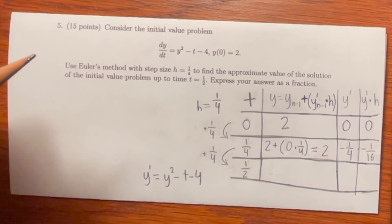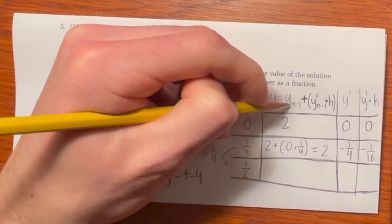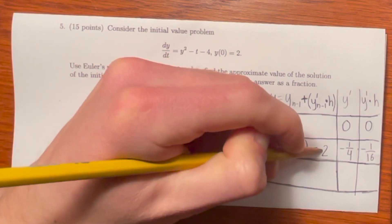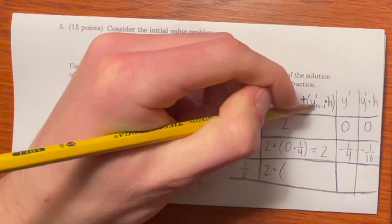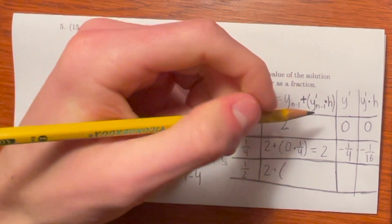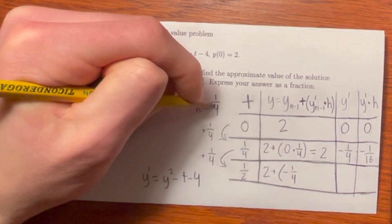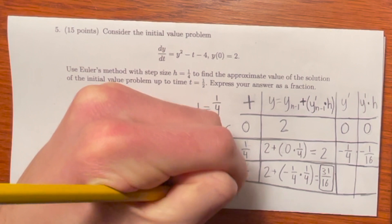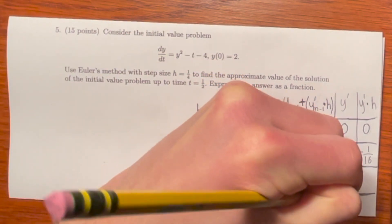Finally, for the last y value, which is the one we're trying to calculate for, we do the same procedure. So y equals y of n minus 1, the y before it. So the y before this one is right here, 2, plus y prime of n minus 1, the y prime before it, which is negative 1 fourth, times h, which is 1 fourth. This becomes 31 over 16. The approximation for y of 1 half equals 31 over 16.